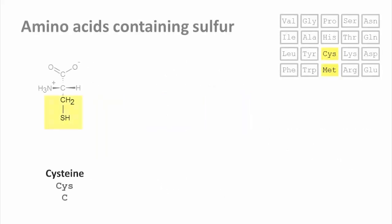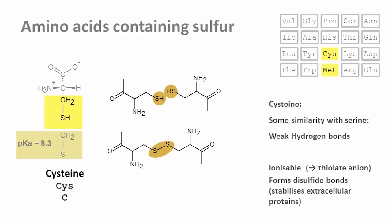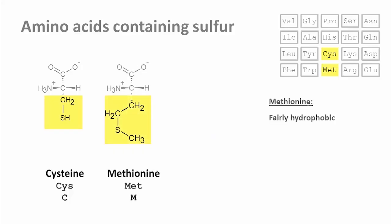Another unique amino acid is cysteine. It is basically the sulfur analog of serine and has some similar properties — for example, it is able to form hydrogen bonds, although these are weaker than those formed by hydroxyl groups. Compared with serine, cysteine is a much stronger acid. With a pK of 8.3 in water, and often less than that within a protein structure, the thiolate anion plays a role in many catalytic reactions. Finally, the ability to join cysteine thiol groups by oxidation is important for the structure of many extracellular proteins, including insulin. Methionine is relatively hydrophobic, about as much as alanine. Its main claim to fame is that protein biosynthesis in all organisms starts with a methionine.